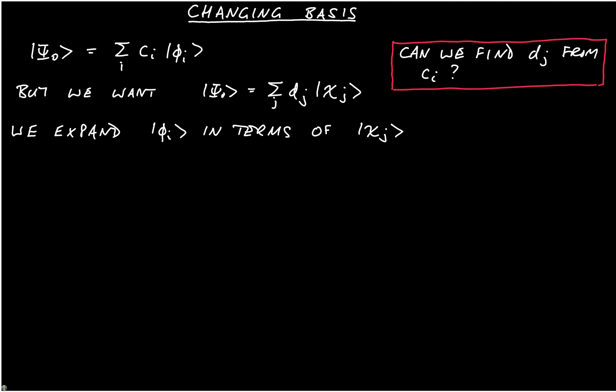And in fact, if you look back up at the very first thing I wrote, the psi 0, we're expanding that in a basis. So there's no reason why we can't expand phi_i in terms of chi_j. If we were going to do that, we would write ket phi_i is a sum over j of some numbers s_ji multiplied by chi_j.